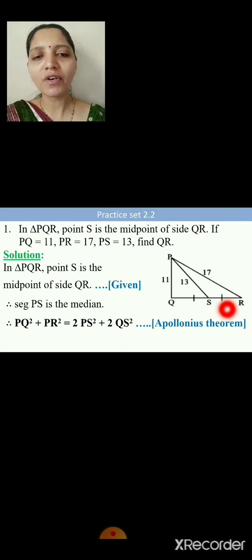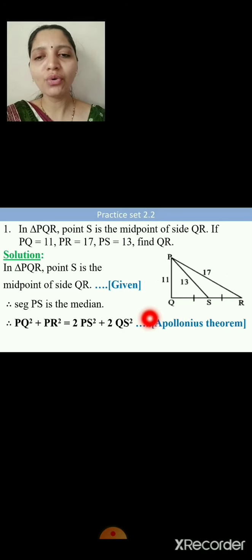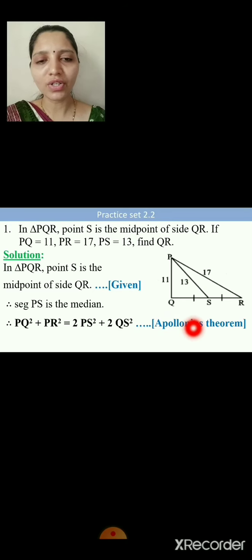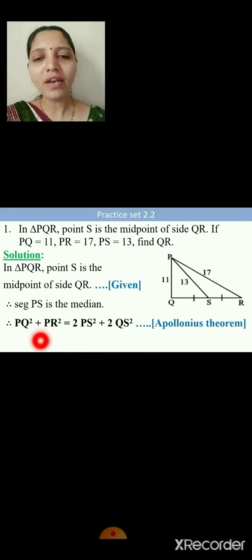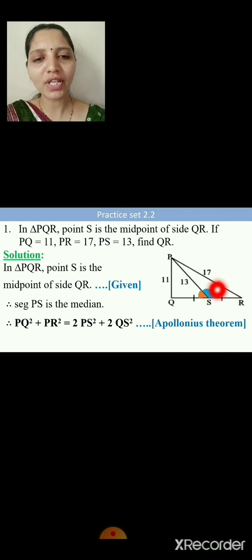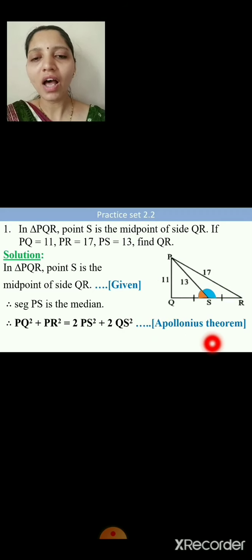Solution: In triangle PQR, point S is the midpoint of side QR (given). Therefore segment PS is the median of the triangle. Since a median is given, we can apply the Apollonius theorem. By Apollonius theorem: PQ² + PR² = 2·PS² + 2·QS². (Angle PSR is obtuse and angle PSQ is acute, so the theorem applies accordingly.)